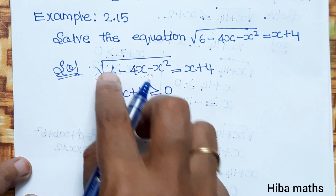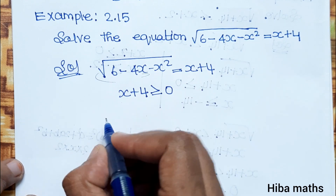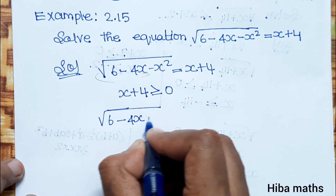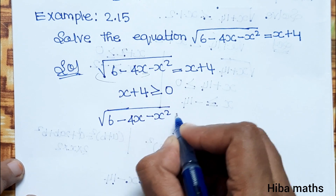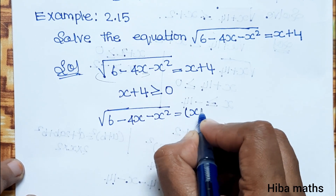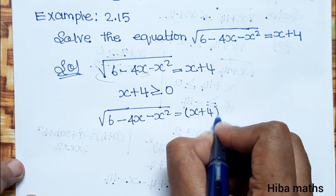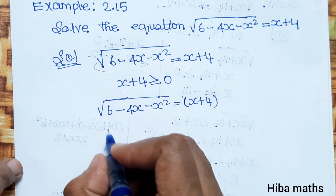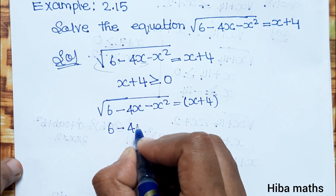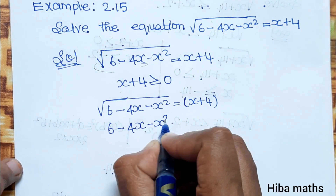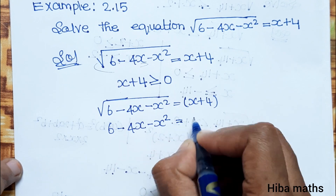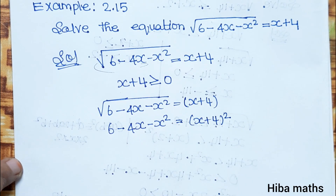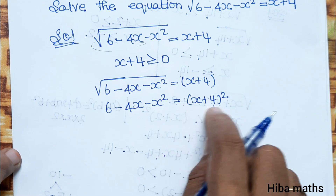I will solve it. The square root of 6 minus 4x minus x squared is equal to x plus 4. If we remove the square root by squaring both sides, then 6 minus 4x minus x squared is equal to (x plus 4) whole squared. This is the second condition.